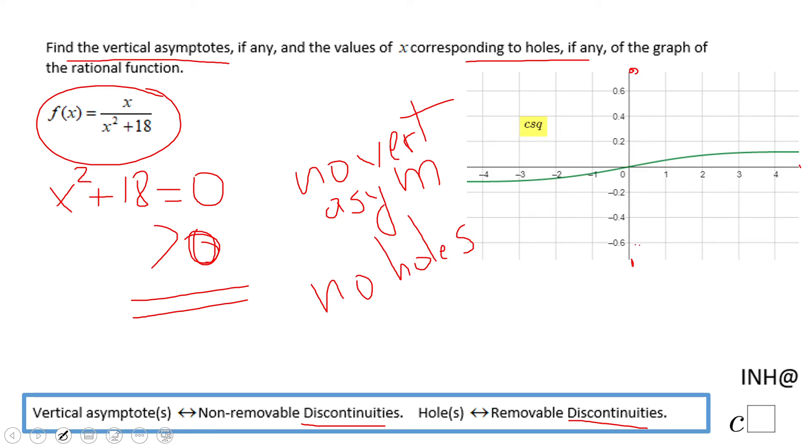And you see in this picture that there are no vertical asymptotes. Of course, you can zoom out more and you'll notice the same story. There are no vertical asymptotes, no holes.